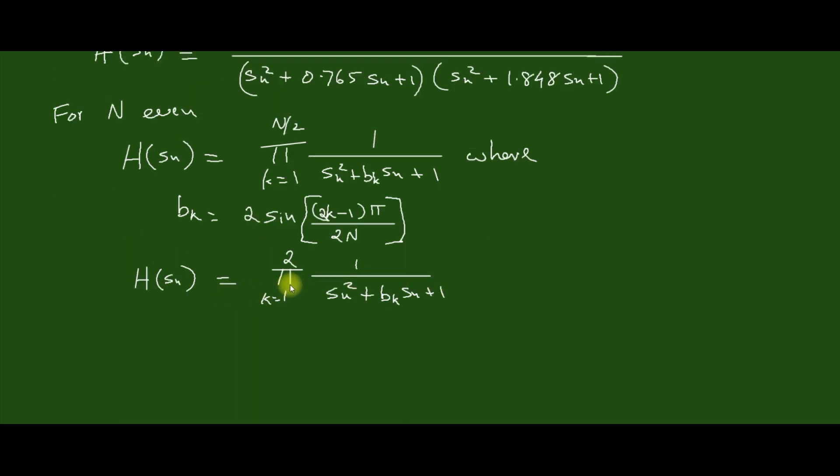Therefore H(s_N) equals the product k=1 to 2. We can write this as 1/(s_N² + B_k·s_N + 1). So for k=1, we have B_1·s_N. This is k=2. Now we can determine B_1 and B_2.